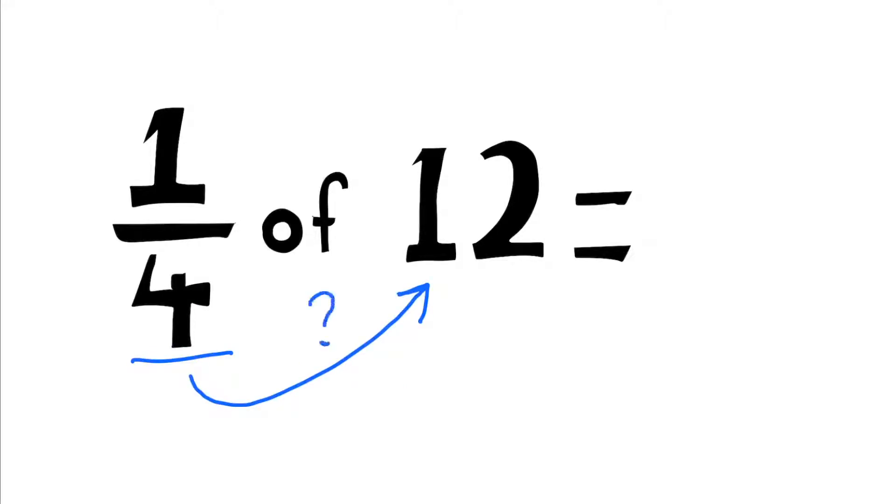Now to appreciate this non-visually, we just have to look at how many fours go into 12, which is three. Therefore, one quarter of 12 is three. So we multiply the three by the one on top. Still the same answer, which is three.